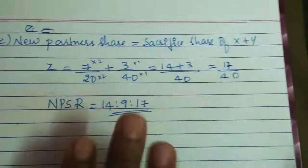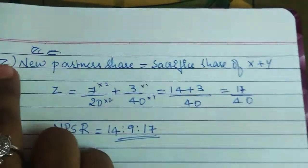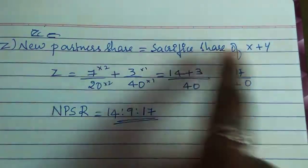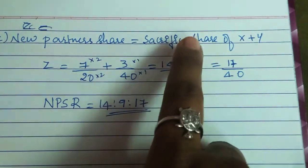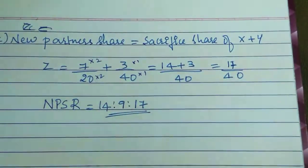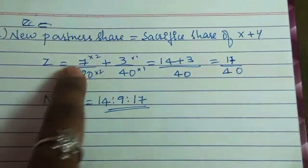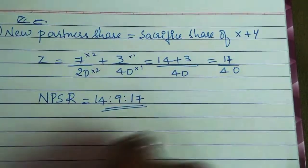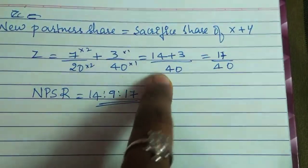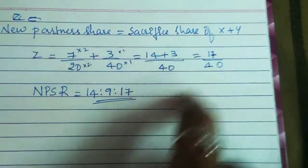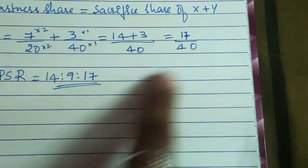Now, what about the new partner Z's share? Since no share was mentioned for Z in the problem, the new partner's share equals the sacrifice share of X plus Y. That is 7/20 plus 3/40 = 14/40 plus 3/40 = 17/40. So the new partner ratio sharing NPSR is 14:9:17.